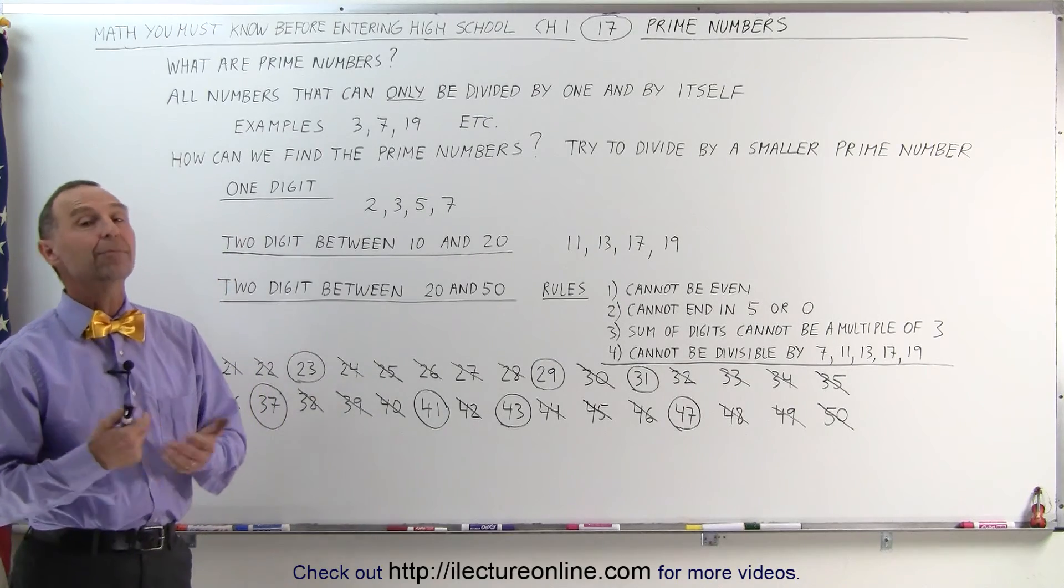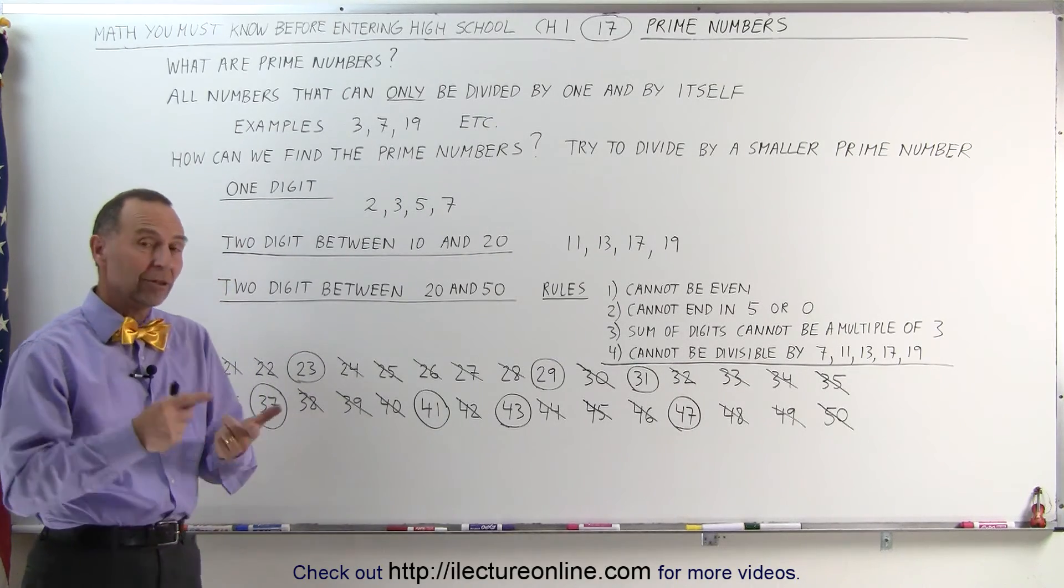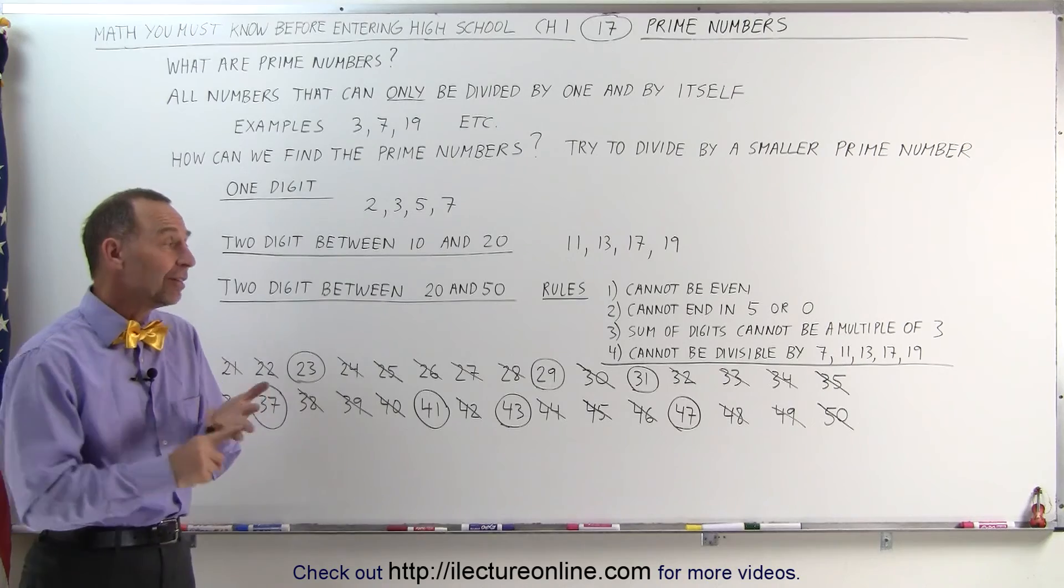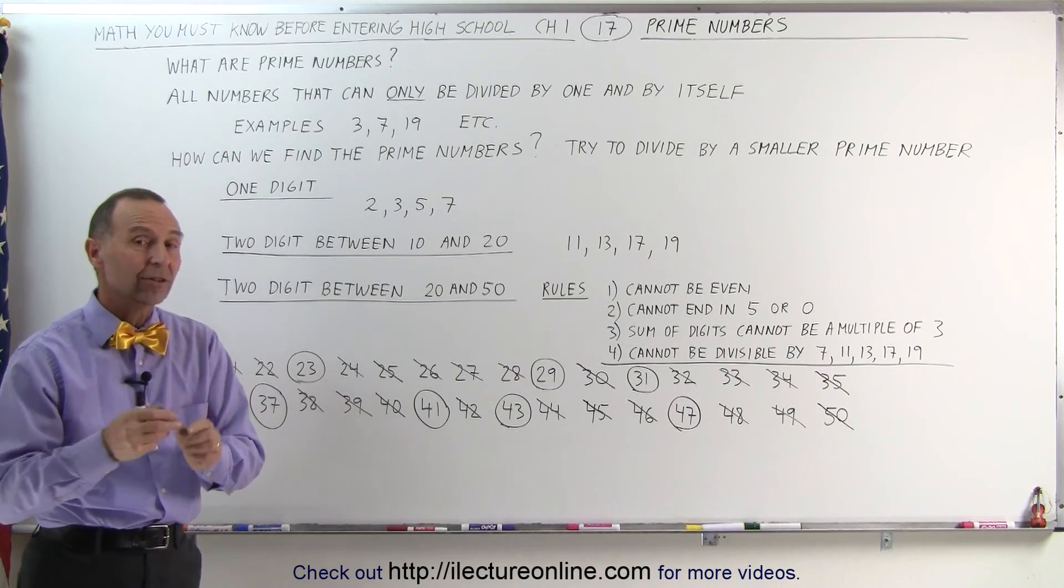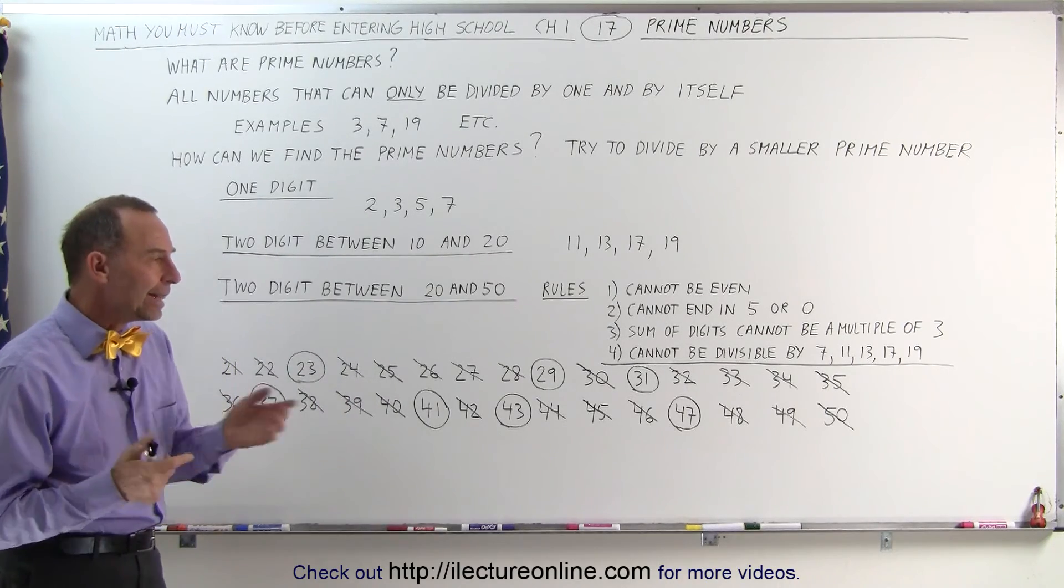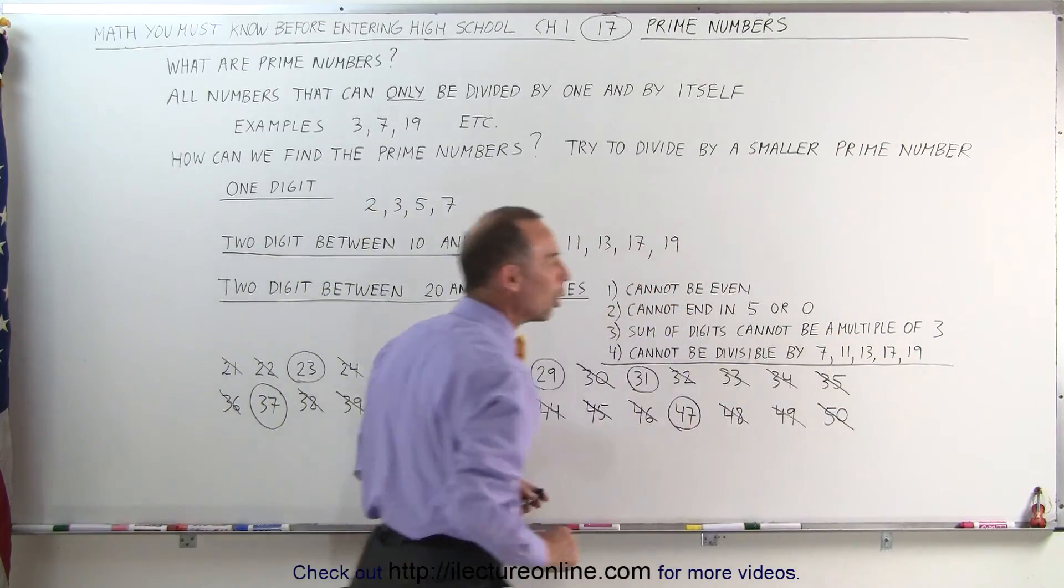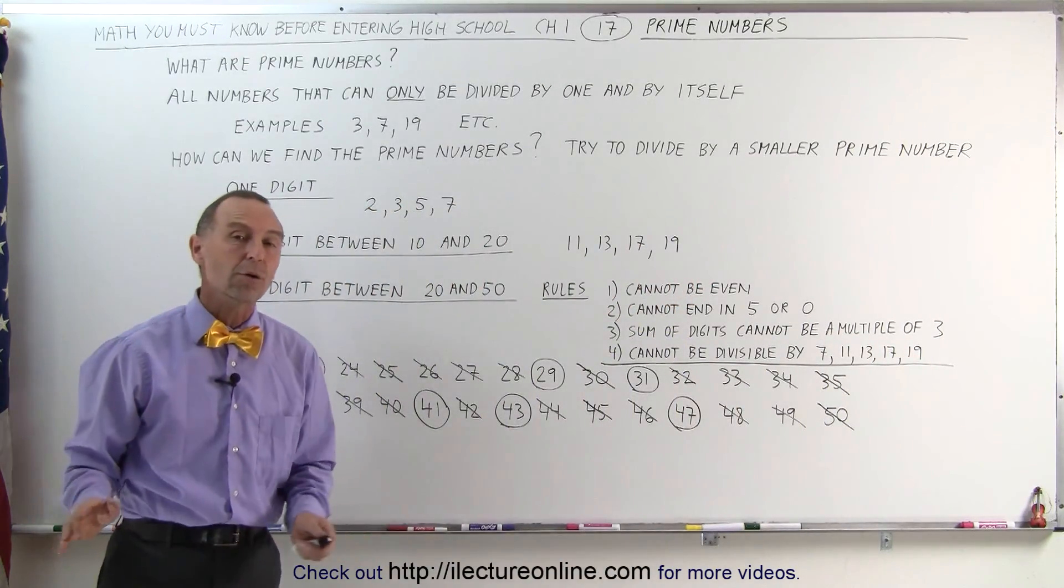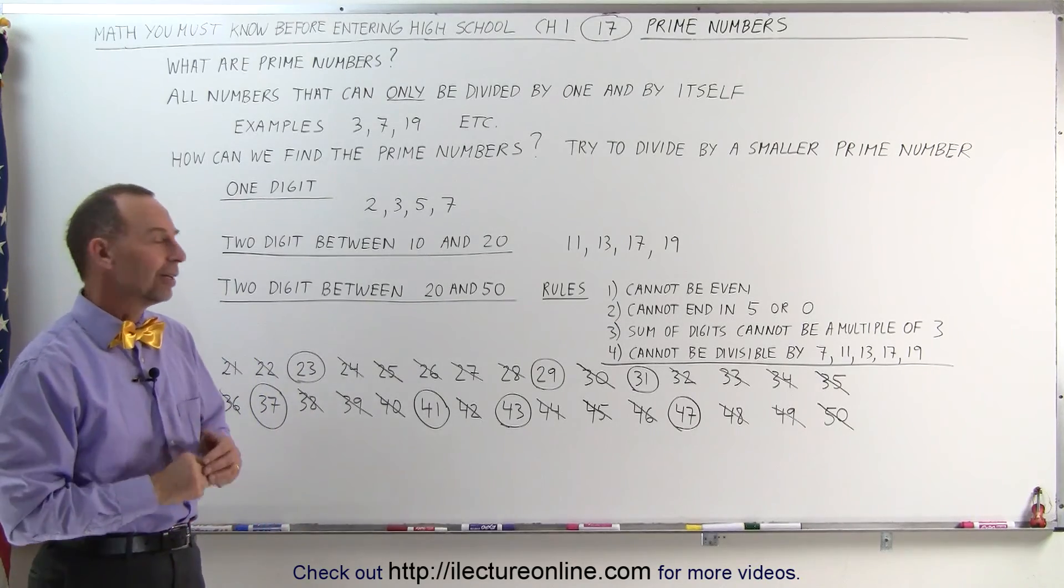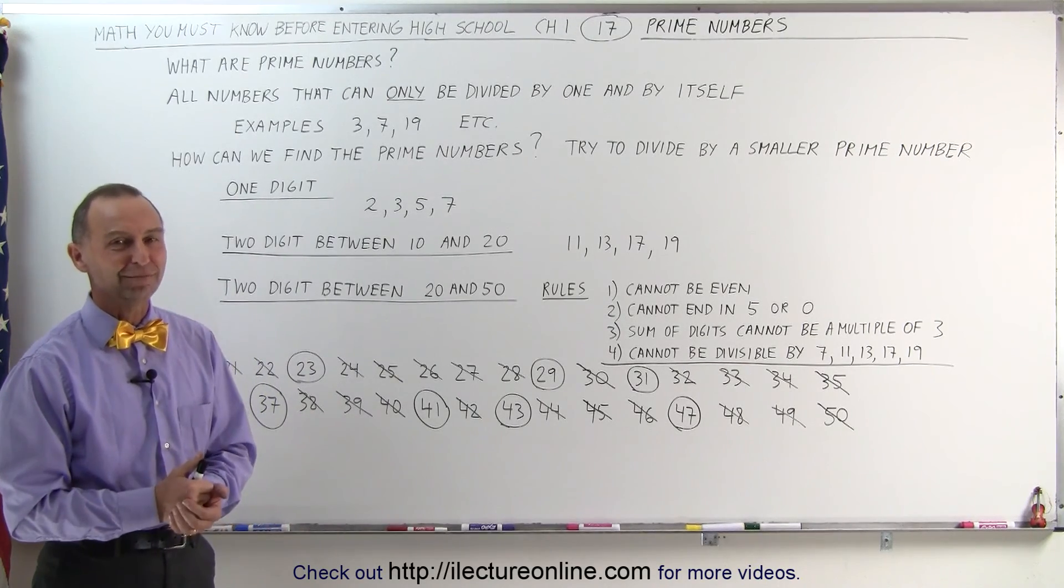And that's kind of the way you do it for any prime number. You simply determine, does it end in a 0 or 5? Is it even? When you add the digits together, is it a multiple of 3? And then, a quick check, can you divide it by a smaller prime number that you know. And if all those answers are no, you're almost sure that you're dealing with a prime number. That's how it's done.